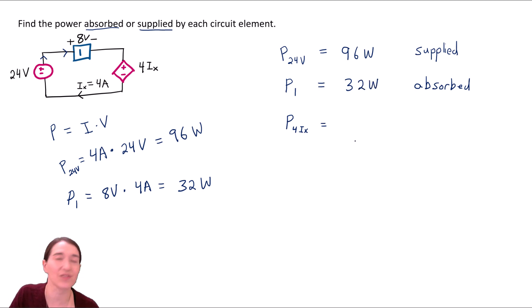Now our last one, which might be a little tricky if you're not used to dependent sources. So this is a dependent source. So the voltage, dependent voltage source, the voltage here depends on this multiplication. So first of all, what is this voltage? Well, what is Ix? Ix is right here. Ix is 4 amps. So the volt here, the volts, let me just write this here. Here for Ix,